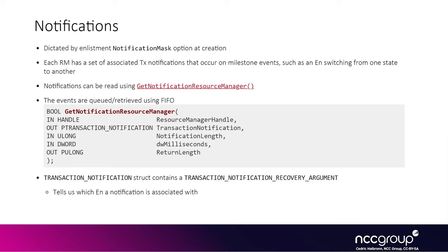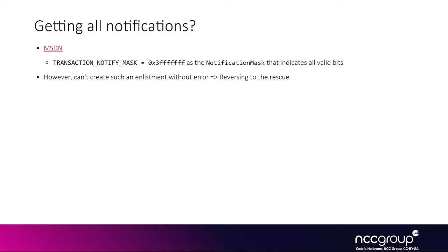There is a userland API called get-notification-resource-manager which lets you get notification information from the resource manager and tells you exactly about the state changes. It gives you that information in a structure called transaction-notification, which is publicly documented. Interestingly and confusingly, the maximum mask documented on MSDN is 0x3FFFFF, but if you pass that mask value to the API it doesn't work and the enlistment is not created at all. We had to reverse engineer the kernel functionality to find the exact value that includes all possible notifications, since the value was different from what Microsoft documented publicly.